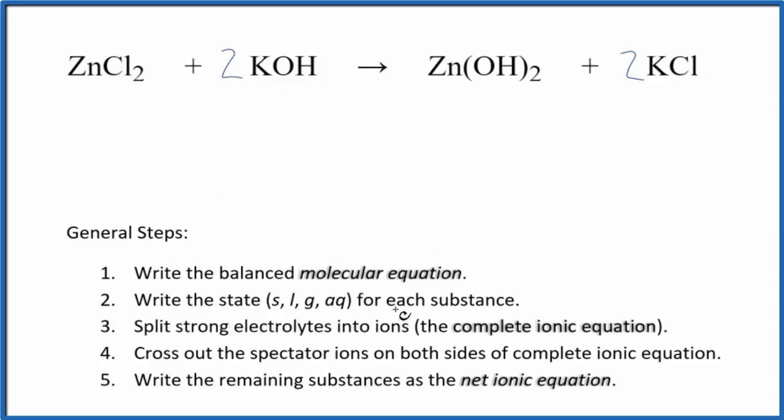Now we need to write the states for each substance. If you've memorized the solubility rules, you know that chlorides are going to be soluble. So we can put an aq after that, aqueous. That means it dissolves in water. It dissociates into its ions.